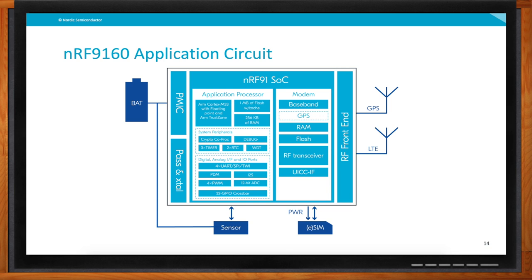If you look at what the application circuit around the NRF9160 looks like: inside the system-in-package you have the modem, application processor, power management, and all the crystals and passives. Basically you just need to connect an antenna for GPS and communication, connect the battery for power, your sensors, and a SIM card - and you're up and running with a complete application circuit. If you go into the documentation and look at low-level detail, you'll see you need to add a few resistors and decoupling capacitors, but that's really it. No complex system design needed on the hardware side.